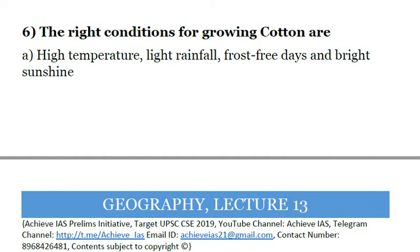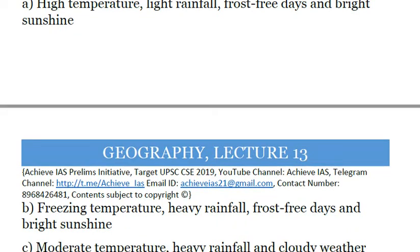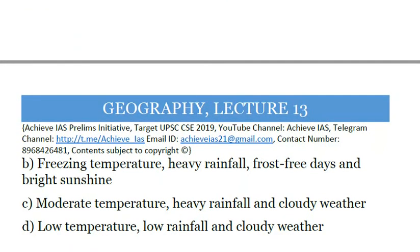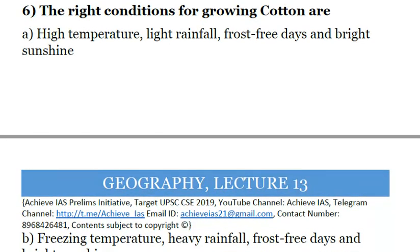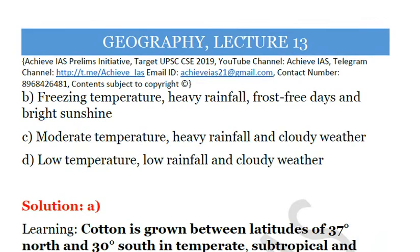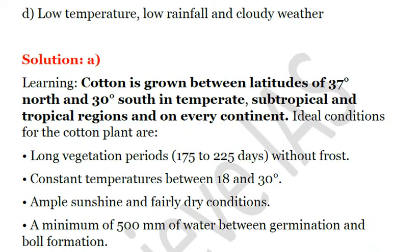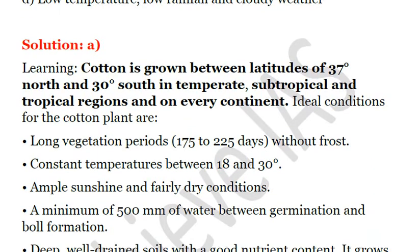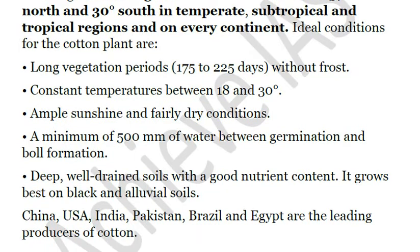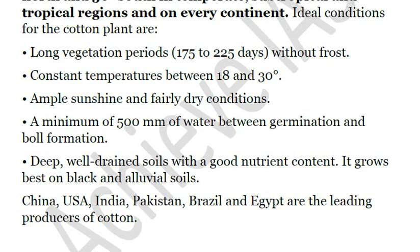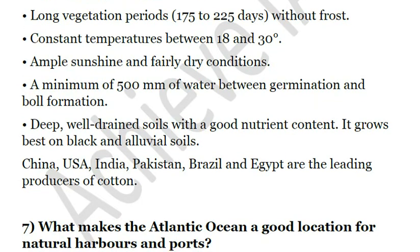Sixth question: The right conditions for growing cotton are A) high temperature, light rainfall, frost-free days and bright sunshine; B) freezing temperature, heavy rainfall, frost-free days and bright sunshine; C) moderate temperature, heavy rainfall and cloudy weather; or D) low temperature, low rainfall and cloudy weather. The correct answer is A — high temperature, light rainfall, frost-free days, and bright sunshine. Cotton is grown between latitudes 37°N and 38°S in temperate, subtropical, and tropical regions. Ideal conditions include temperatures of 18–30°C, a long vegetation period without frost, ample sunshine, fairly dry conditions, a minimum of 500 mm of water between germination and boll formation, and deep well-drained soils with good nutrient content. It grows best on black and alluvial soils. China, followed by USA, India, Pakistan, Brazil, and Egypt are the leading producers.